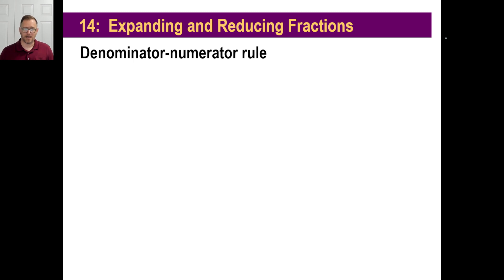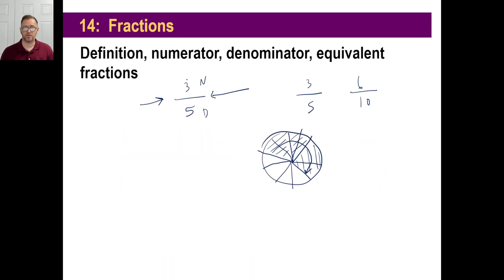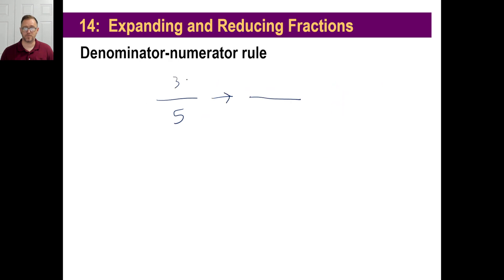The denominator-numerator rule is this: whatever you do to the numerator to keep things the same, you have to do the same thing to the denominator. In other words, if you cut all those pieces of pizza into two, then you need to take care of the denominator as well when you write the fraction. So you do the same thing to the numerator and denominator to make things equivalent.